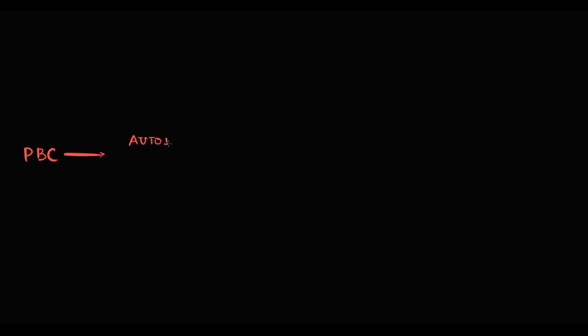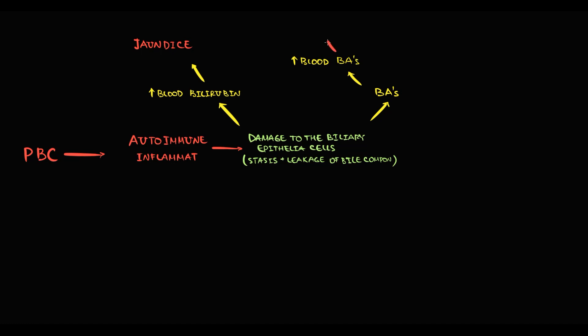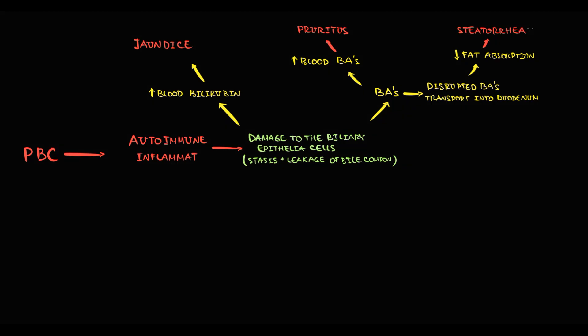The clinical symptoms of primary biliary cholangitis stem from the leakage of bile content into the blood. First, elevated blood bilirubin causes jaundice. Second, increased bile acids in the blood cause pruritus. Also, because the bile ducts are destroyed, the passage of bile into the duodenum is disrupted, and without bile acids we cannot absorb lipids, resulting in steatorrhea. The third substance leaking into the blood is cholesterol.